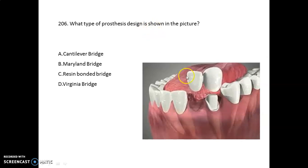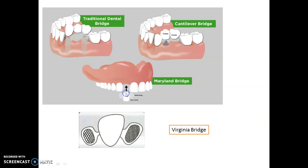Which type of prosthesis is shown in the picture? This is an example of a cantilever bridge. Let's see the different types of bridges. This is your traditional dental bridge, this is the cantilever bridge which has one crown and a pontic, this is the Maryland bridge which has one false tooth along with a metal wing, and this is the Virginia bridge.